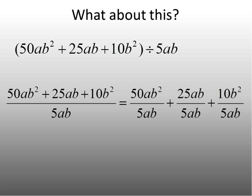Now I'm going to simplify. 50ab squared divided by 5ab, which leads me to 10b. 25ab divided by 5ab, which leads me to 5. The variables are exactly the same. 25 divided by 5 is 5.